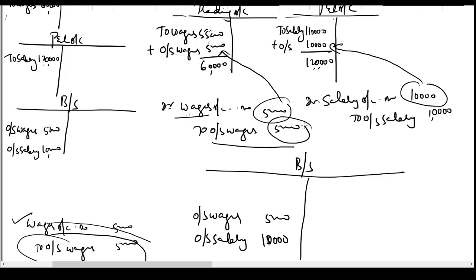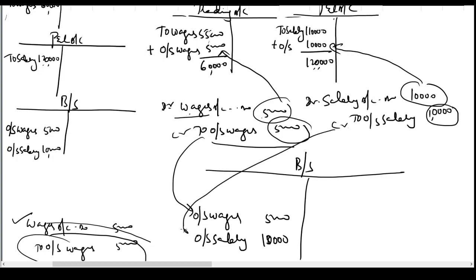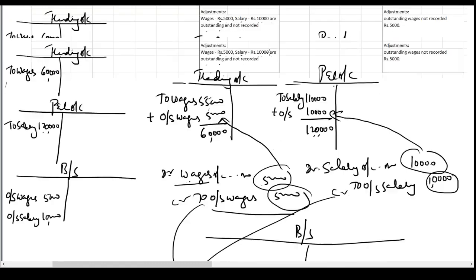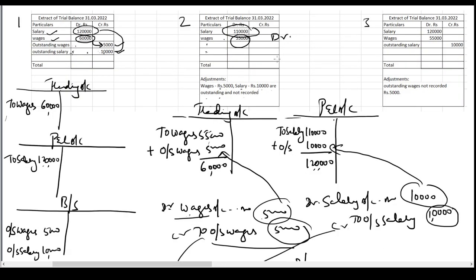Outstanding wages and outstanding salary accounts show credit balances — 5,000 and 10,000 respectively. These are personal accounts with credit balances and are shown as liabilities in the balance sheet: outstanding wages 5,000, outstanding salary 10,000. This is how we deal with outstanding expenses given outside the trial balance.